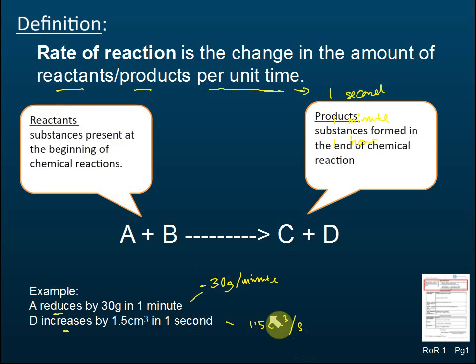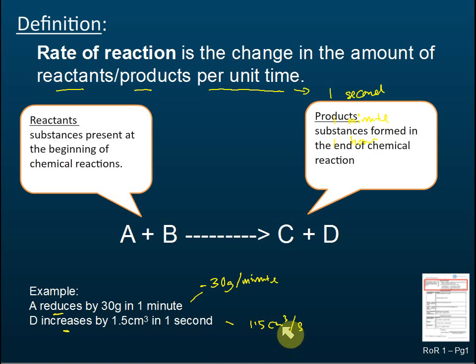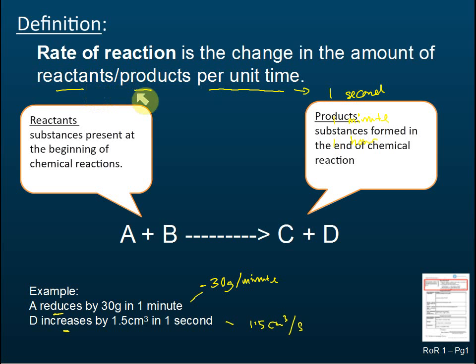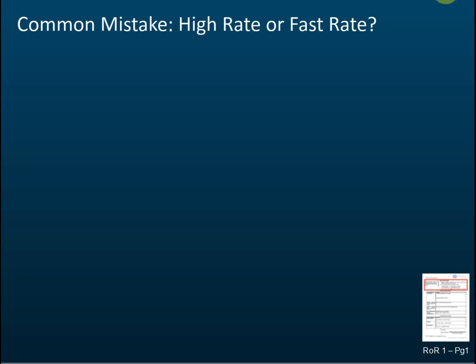And for the product increasing, we write 1.5 cm³ per second. Both of these are examples of the rate of reaction — the measure of how fast a reaction occurs, or by definition, the change in the amount of reactants or products per unit time.